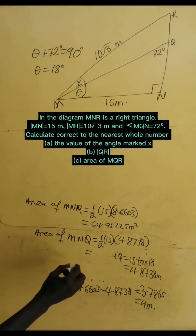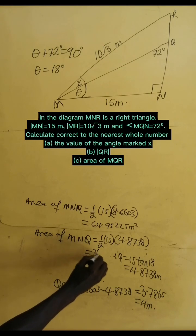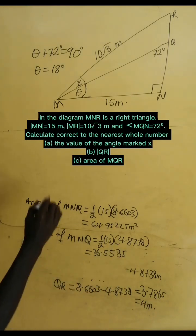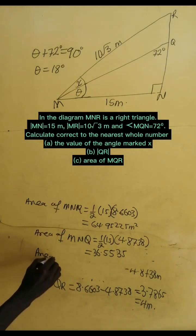So, let's put 4.8738 there. Now, if we multiply this on the calculator, we get 36.5535.